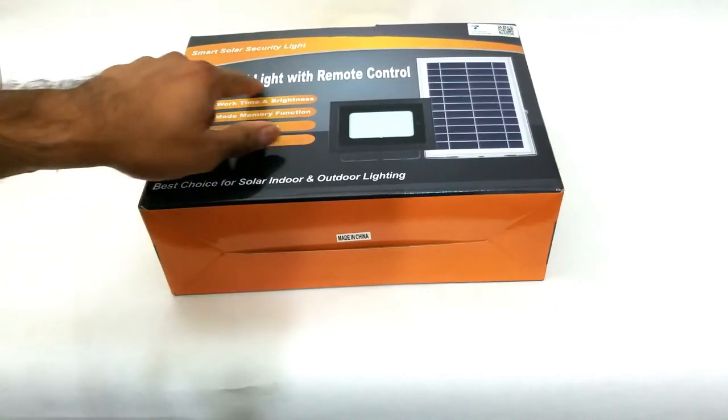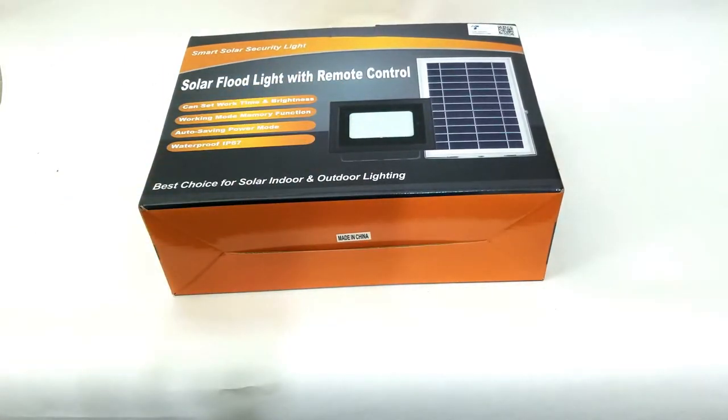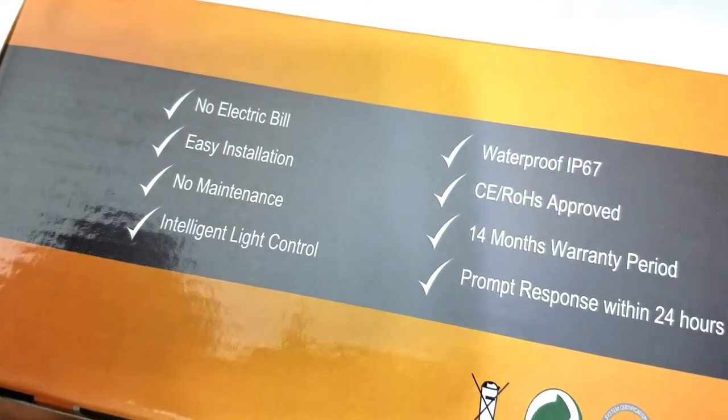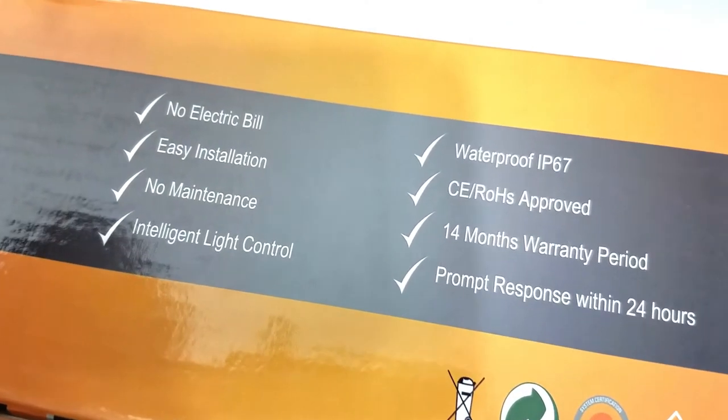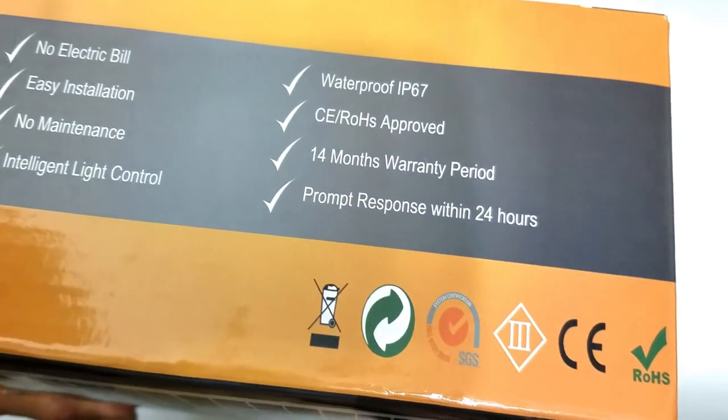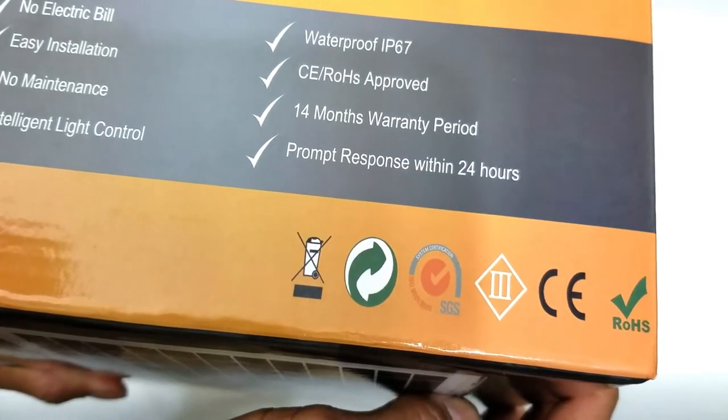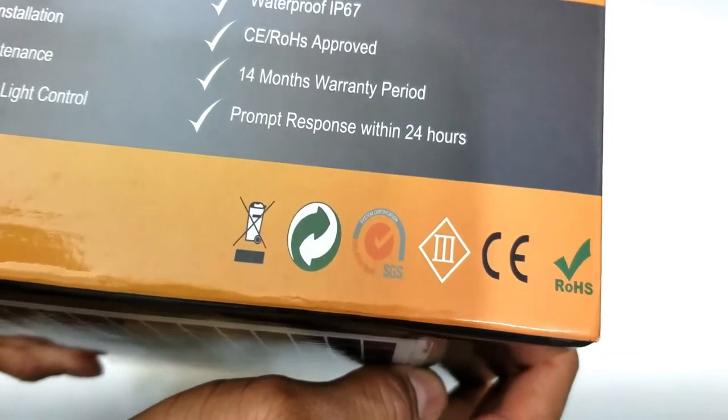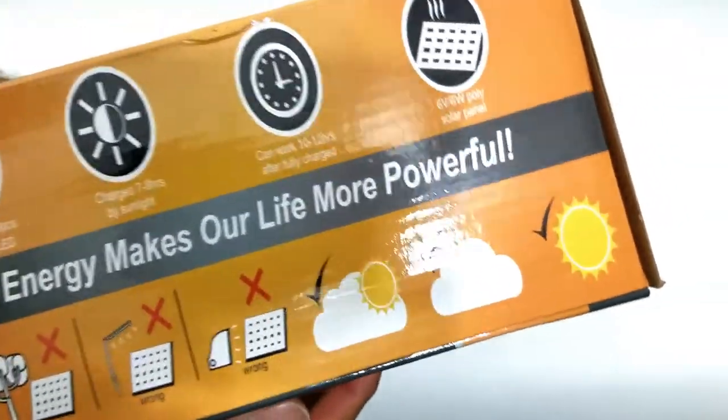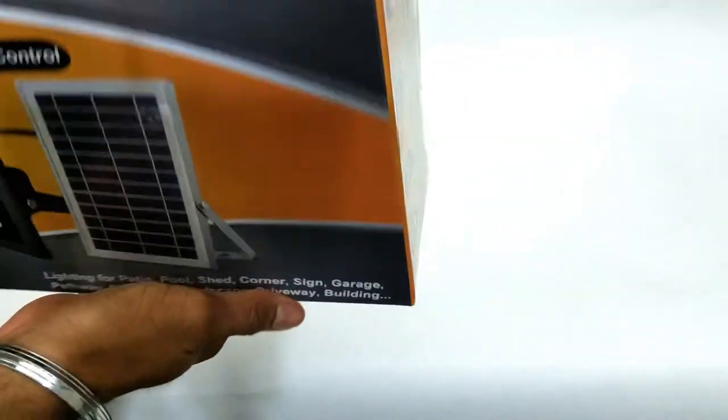That item being a solar floodlight with remote control. This is the product. The benefits of this item are no electric bill, easy install, no maintenance, integrated light control, it is waterproof and has a 14 month warranty period and prompt response within 24 hours. It can even provide light in partial light sources if it's a cloudy sky.